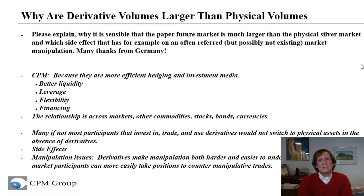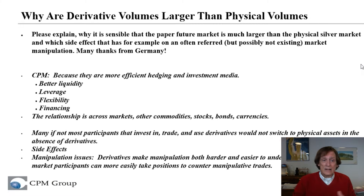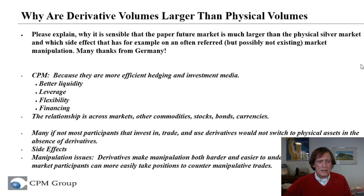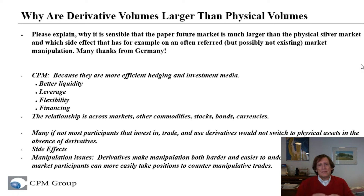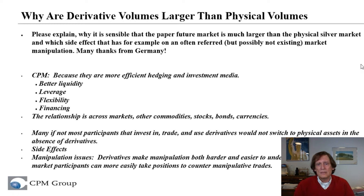Why are derivative volumes larger than physical ones? The simple answer is that because derivative markets are paper markets or futures markets — but it's not just futures. It's futures, forwards, options, and a variety of other products. They're more efficient for hedging.